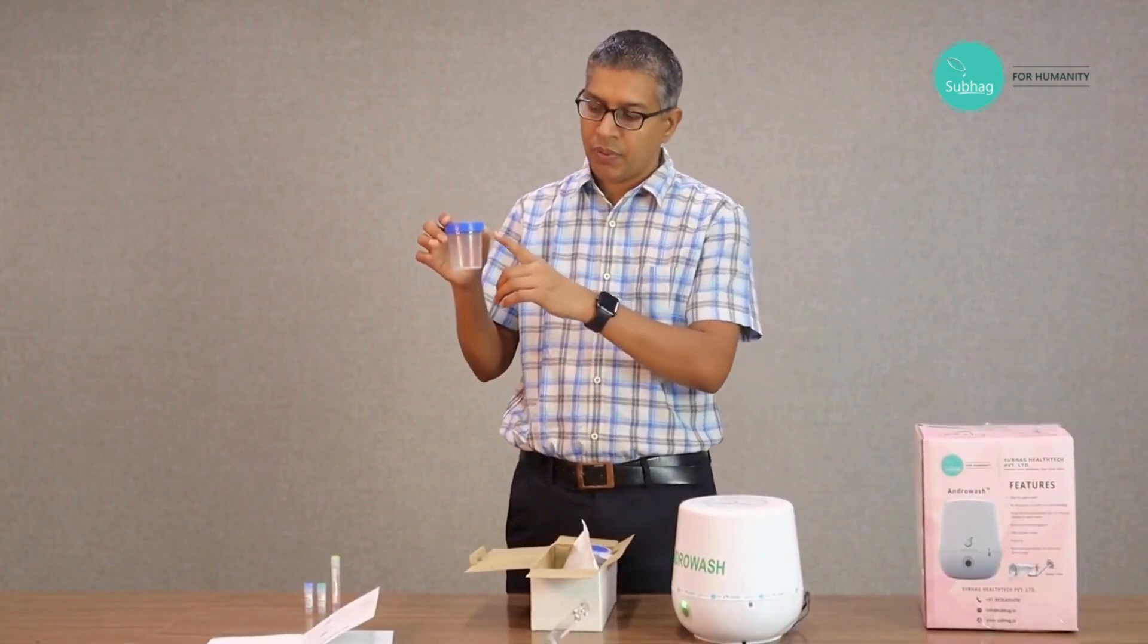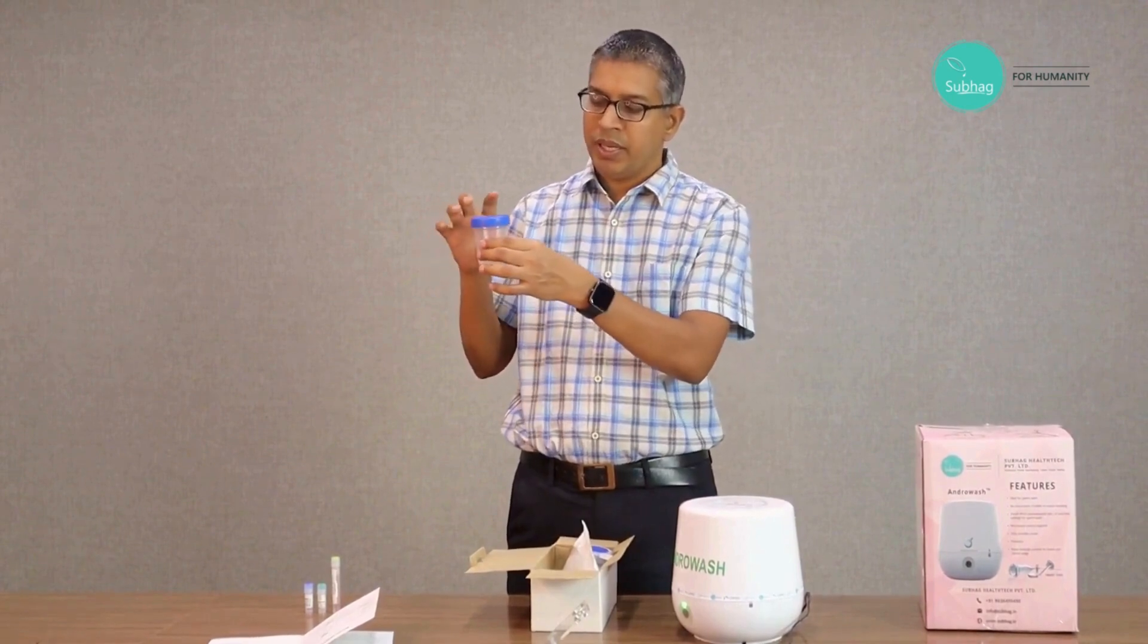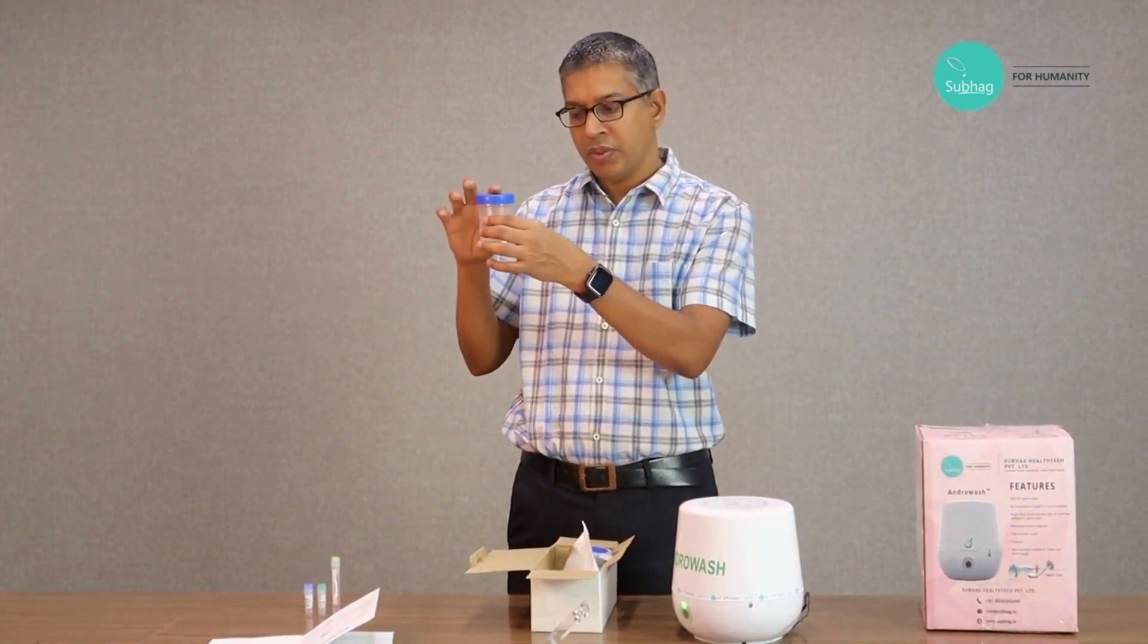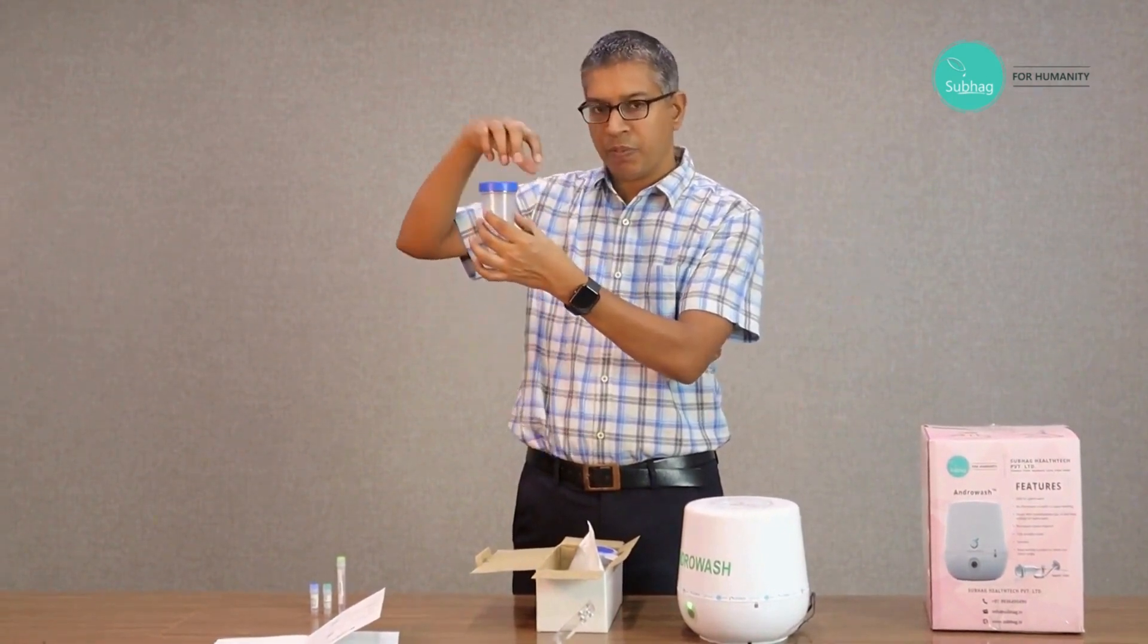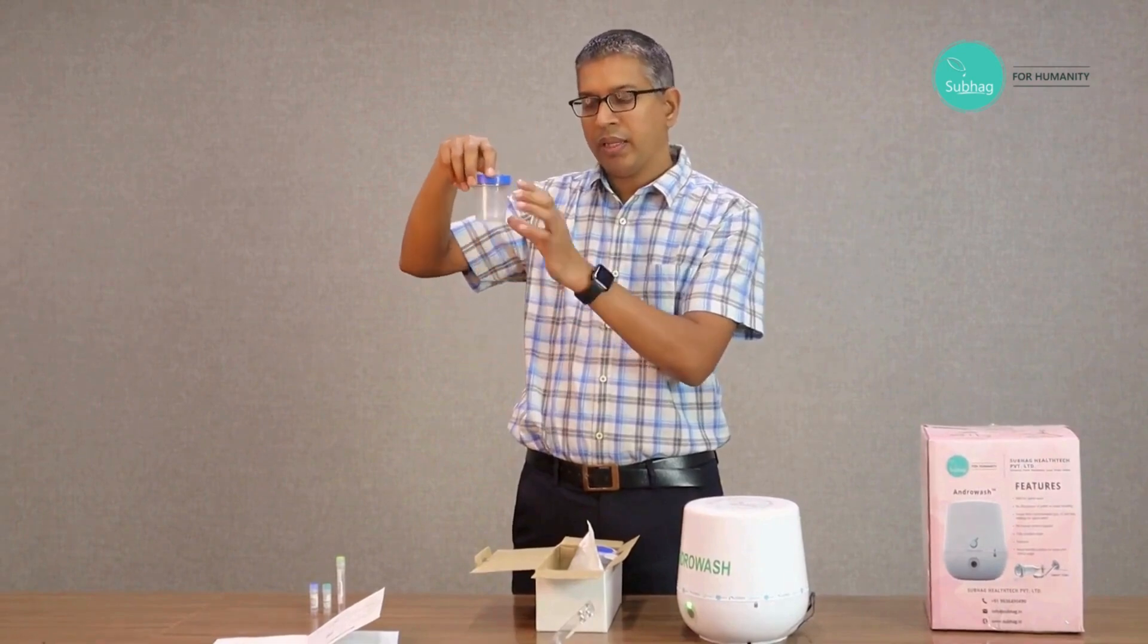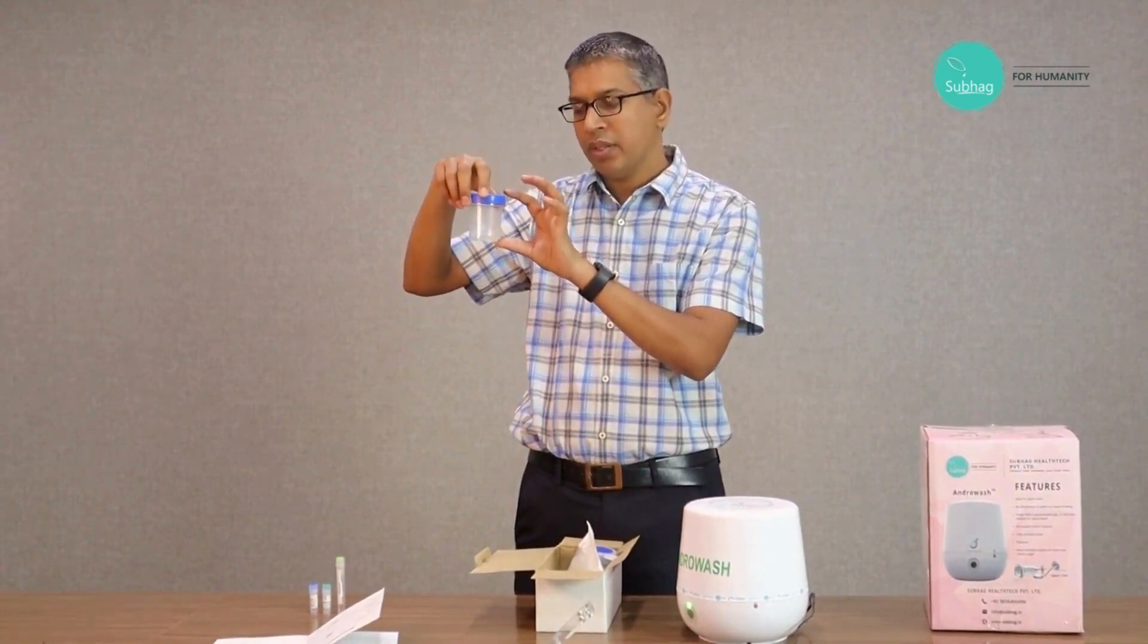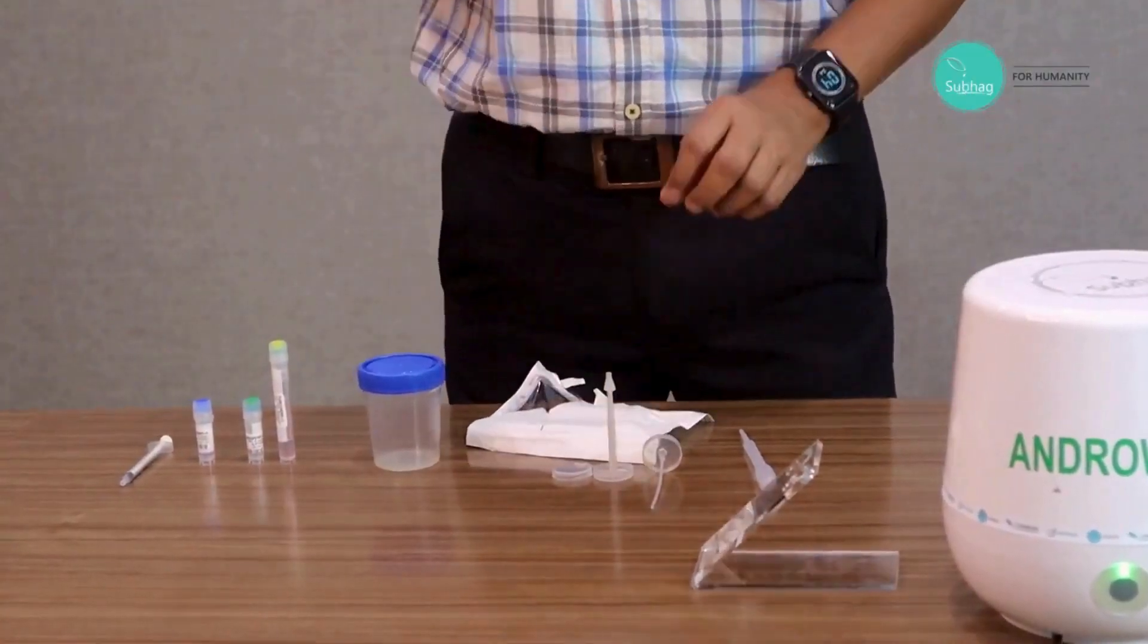As step number one, first what we need is the semen sample. The husband is provided with a sterile container, so he ejaculates into this, and then the cap is put back onto it. Then this is left in room temperature for half an hour so that it gets liquefied. To start the washing, we take the centrifuge tube.